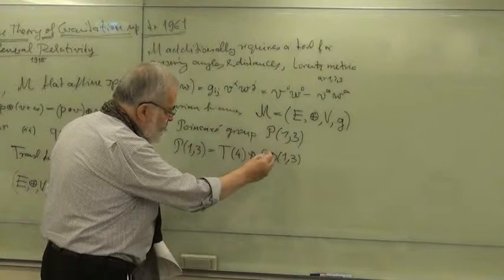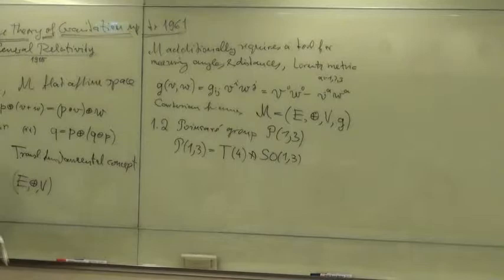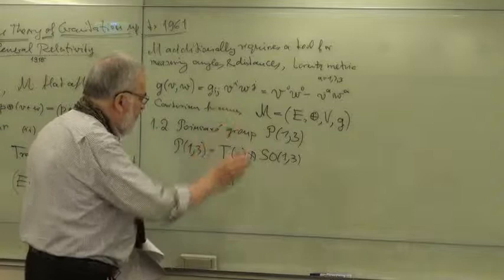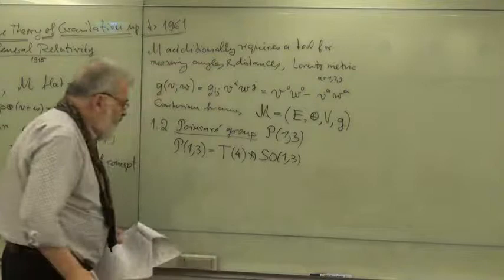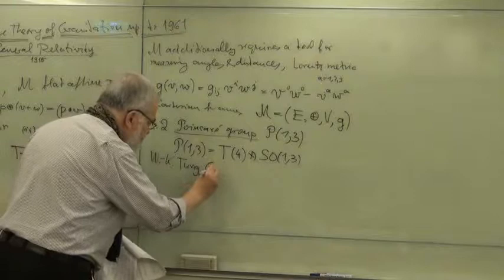The translations are four-dimensional, and this is the orthogonal group in four dimensions with signature 1-3 and is special, so the determinant is one. This is the Poincaré group. One could give a whole lecture about the Poincaré group. There is an excellent book by Wigner which I like particularly.